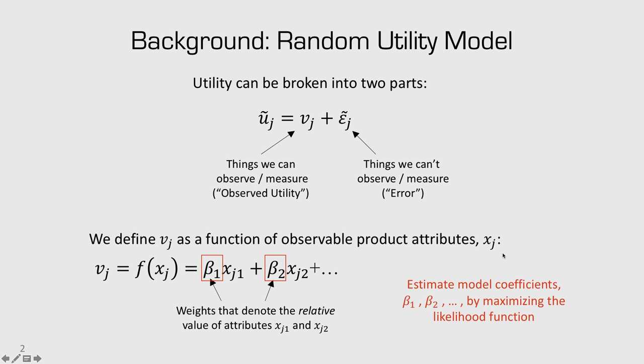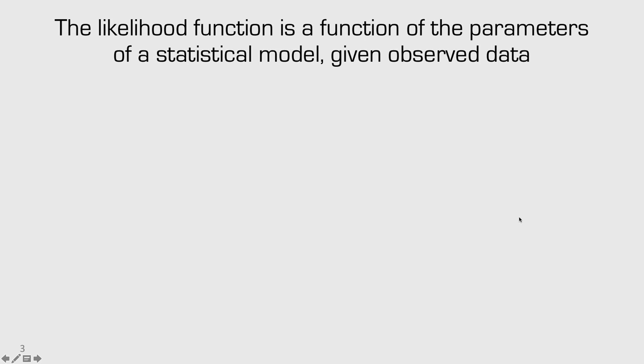To understand that, we first have to understand what a likelihood function is, and then we have to understand how to maximize it — and that's the process of optimization. The likelihood function is a function of the parameters of a statistical model given observed data.